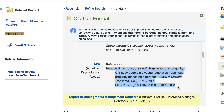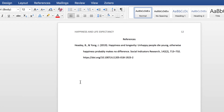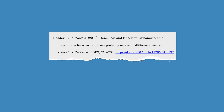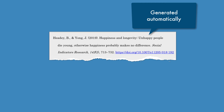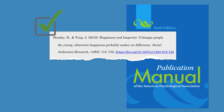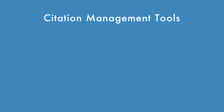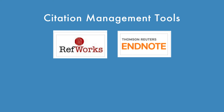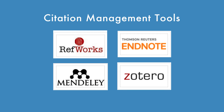From here, you can copy the citation and paste it into your bibliography, your notes, or wherever you need it. It's important to note that the citations presented here are generated automatically and are not checked for accuracy. For this reason, you should always double-check the citation against the rules and guidelines in the Publication Manual of the American Psychological Association, 6th edition.